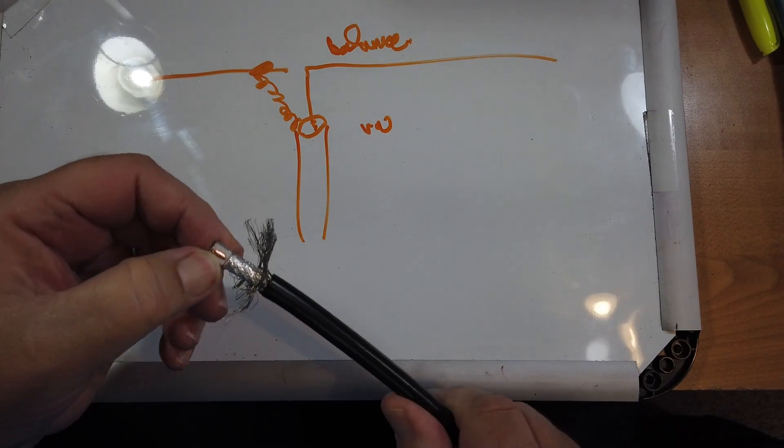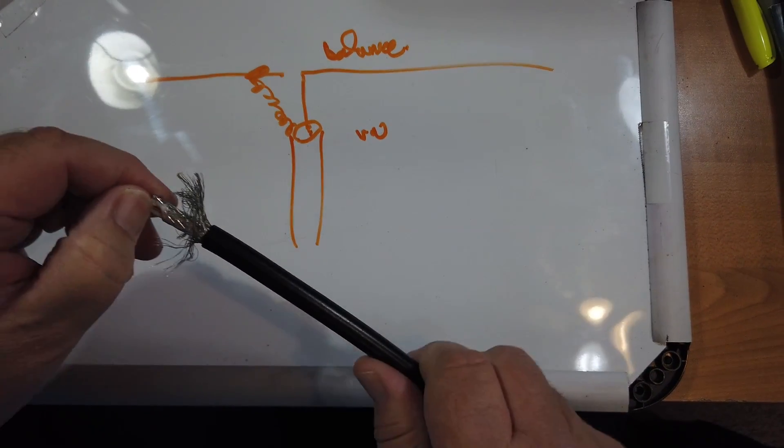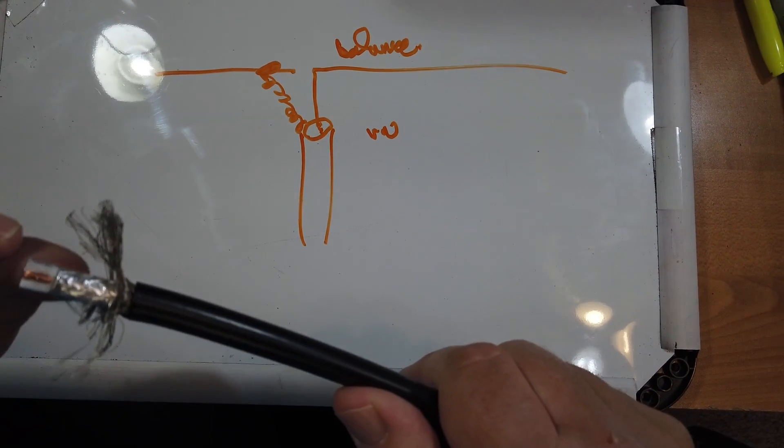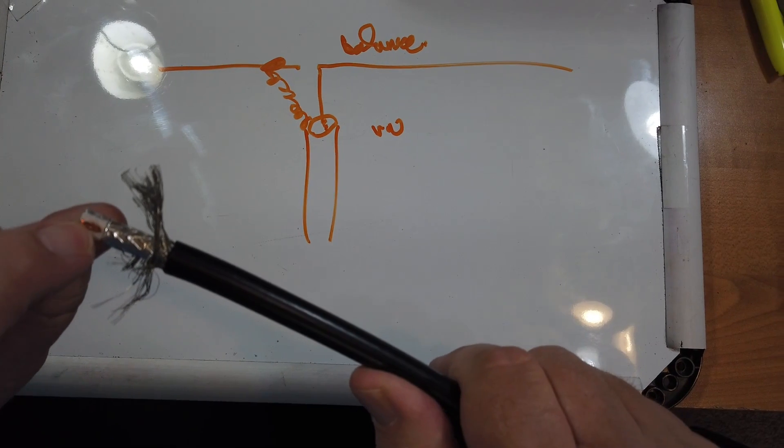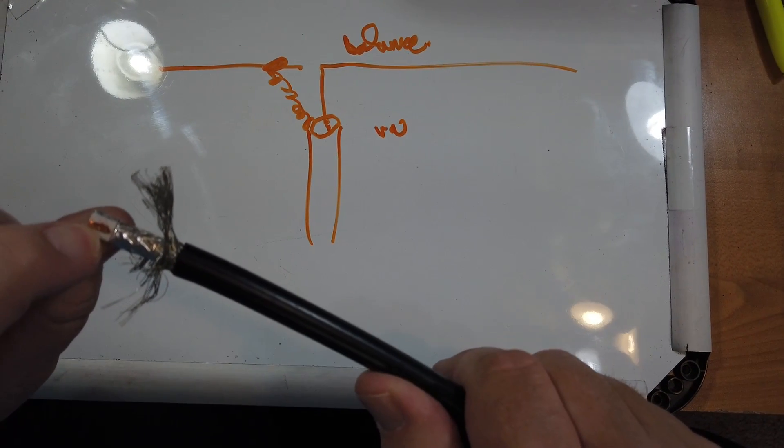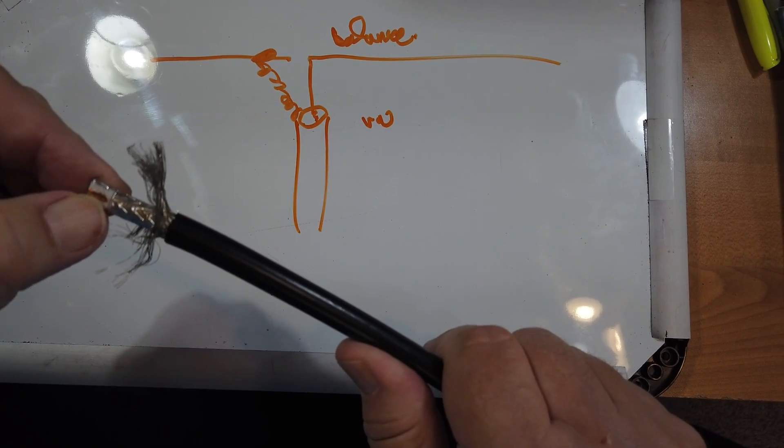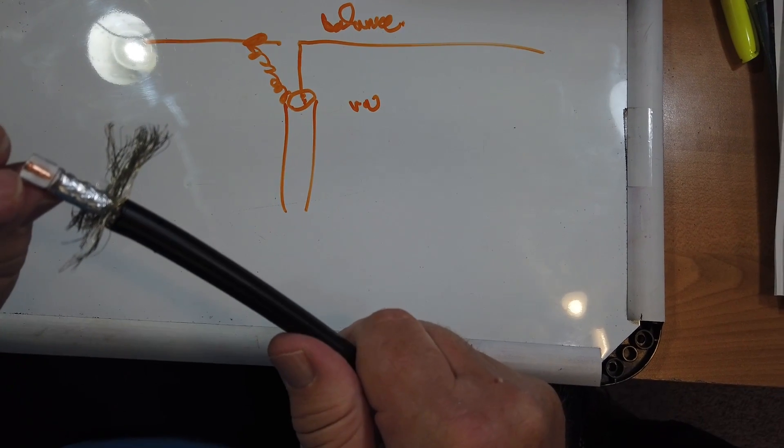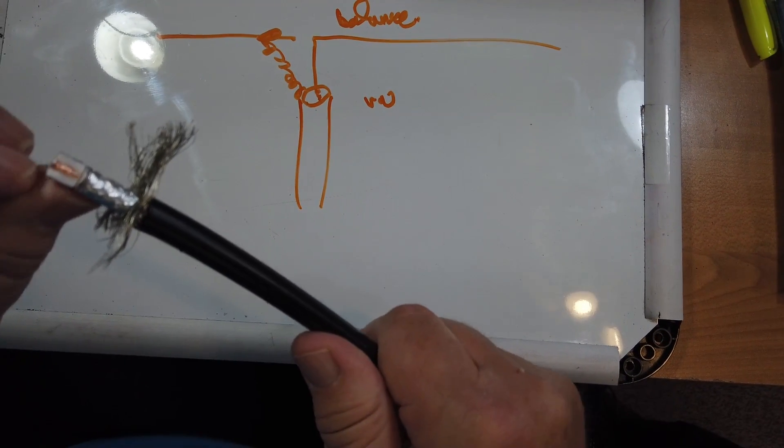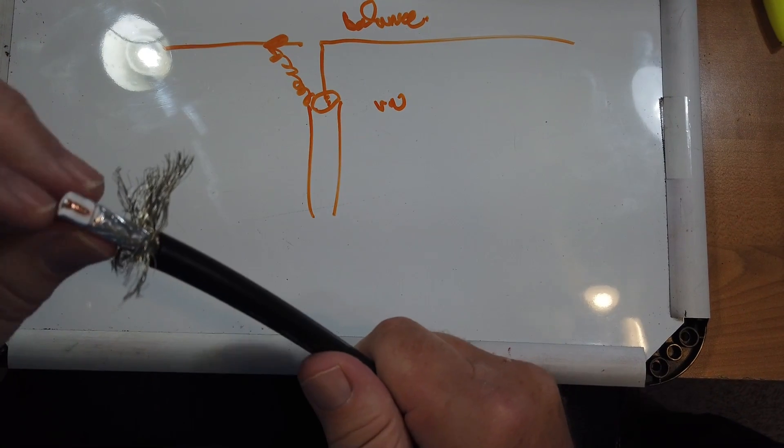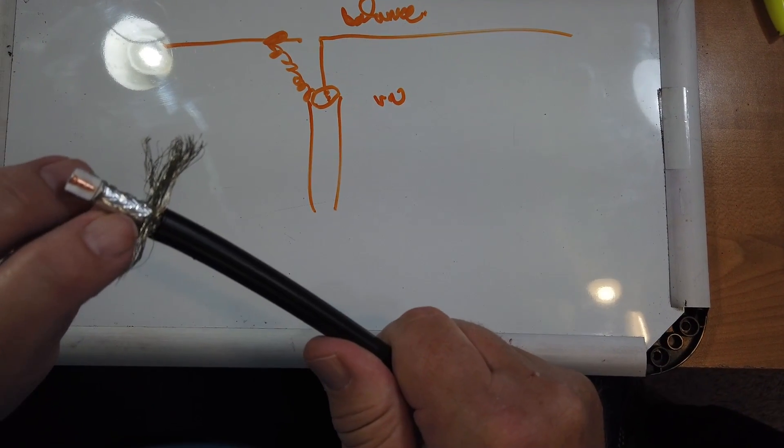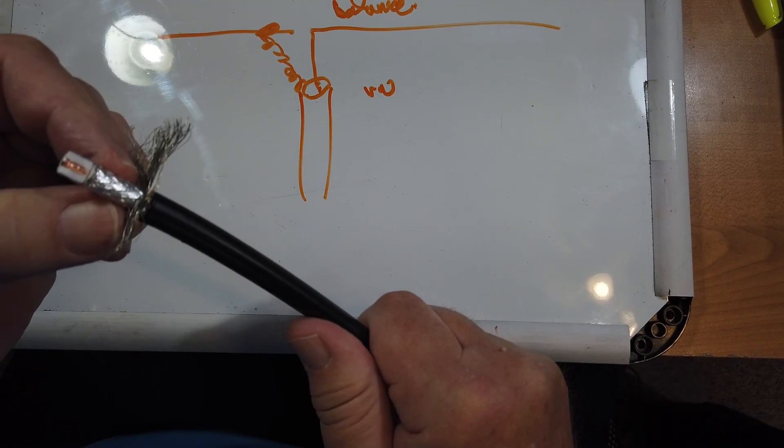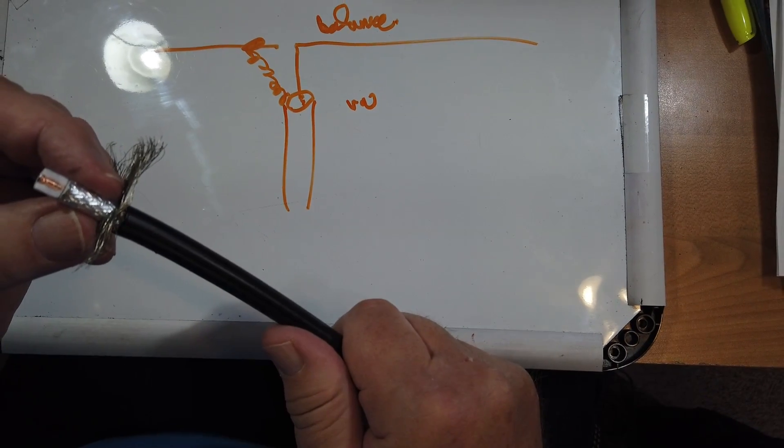RF travels on the skin of the conductor, which is why this has got aluminum in the center for weight, and it's copper coated, copper plated. Okay, and the RF actually travels through the copper part. Now, what about the return conductor? The inside of the coax here is the inside of this aluminum shield.